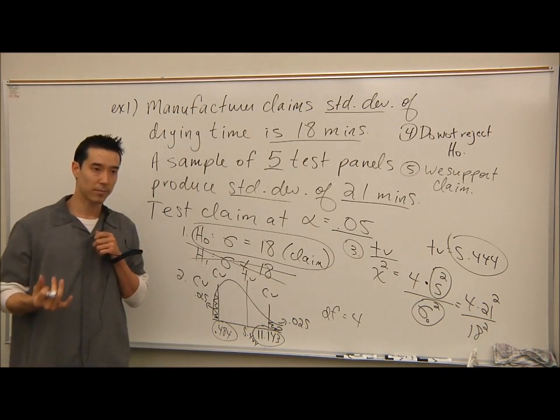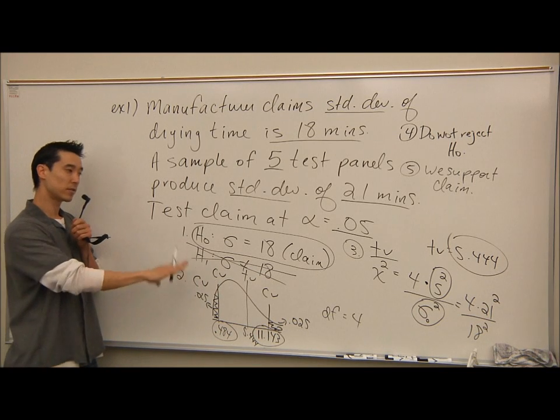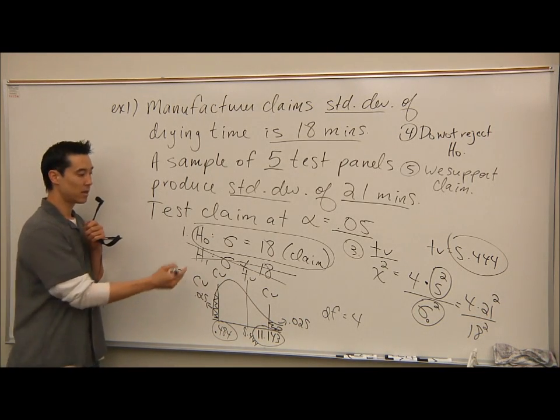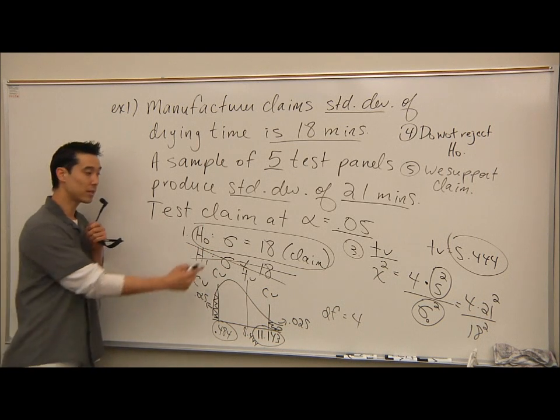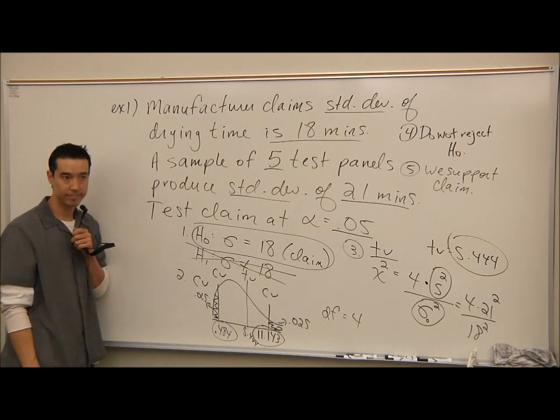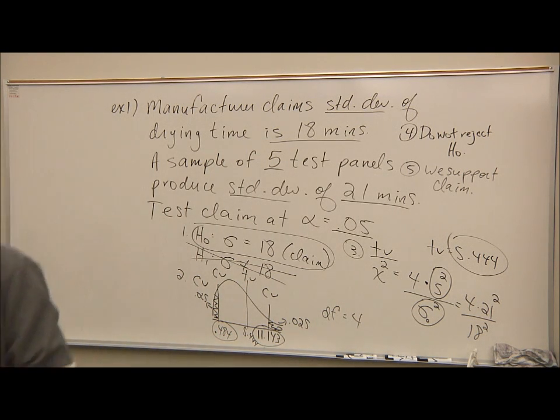So that should be able to handle, if they throw a variance problem at you, or the variance. If they throw a standard deviation, it's the same task. The only thing that might be changed a little bit is how you set up H0 and H1. I just use sigma here instead of sigma squared. Any questions on that? All right. Thanks. Thanks.